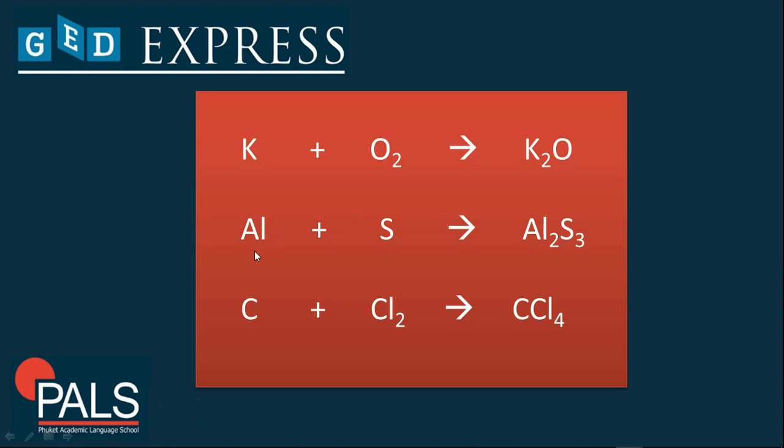In this case, we have aluminum plus sulfur that will give you aluminum sulfide. So aluminum is one, sulfur is one, but on this product side you have two aluminum and three sulfur.